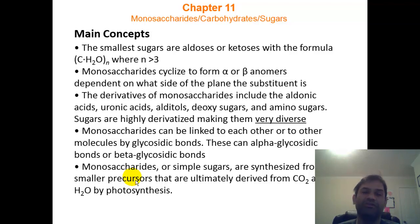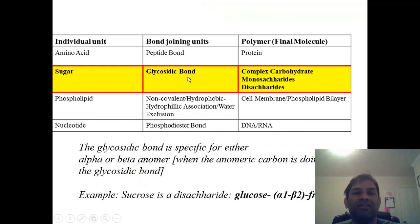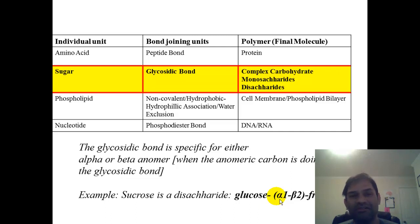Galactose is also metabolized. Sugars are joined together via a glycosidic bond, and we actually define the type of bond. Going back to proteins, a peptide bond is straightforward. A glycosidic bond is a little bit more complicated.